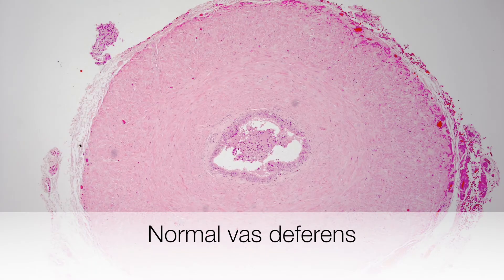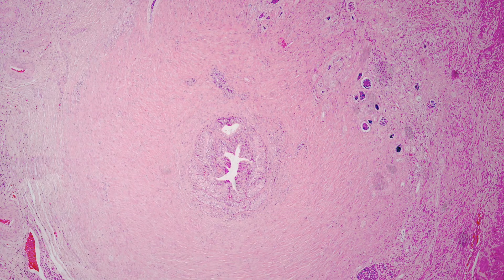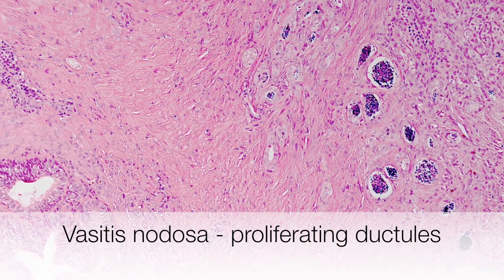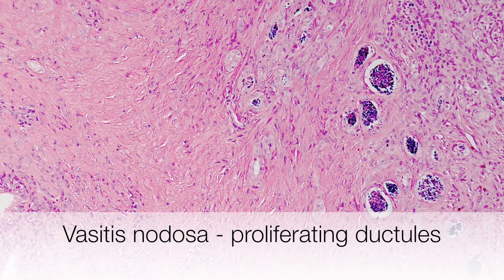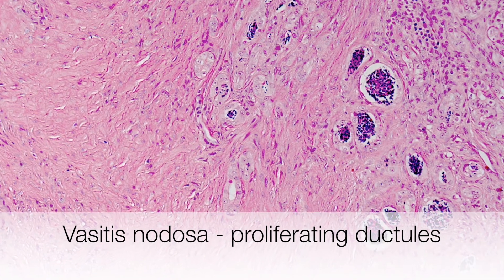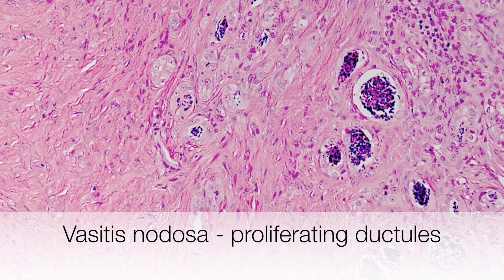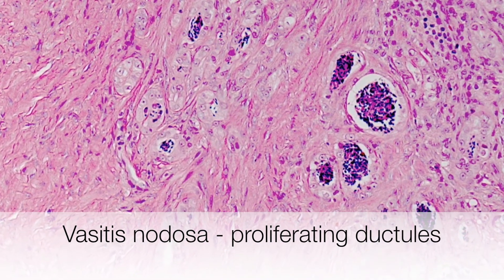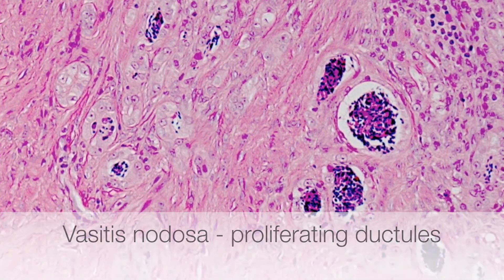This is a cross-section of a normal vas deferens and here is a cross-section of vasitis nodosa. At the bottom left of the picture is the lumen of the vas deferens. As we move towards the top right, there is some fibrosis, a little chronic inflammation, and you can see proliferating ductules that have rather pale cytoplasm and a micro-acinar appearance bearing some resemblance to micro-acinar prostatic adenocarcinoma.